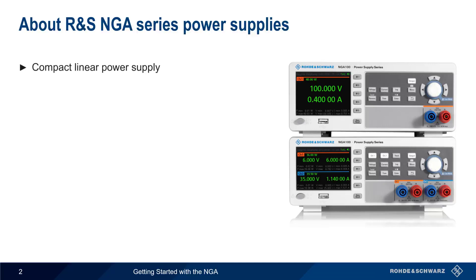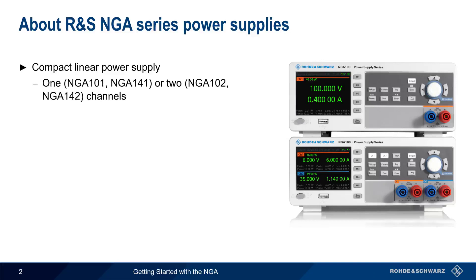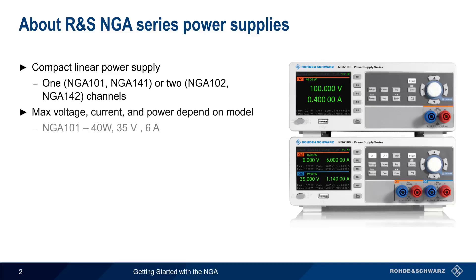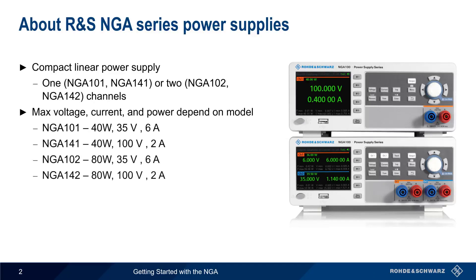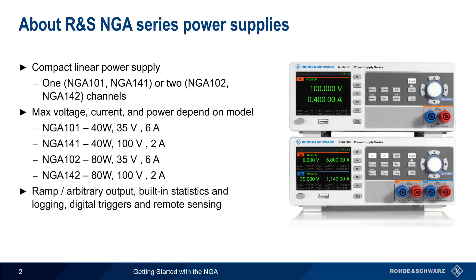The NGA is a series of compact linear power supplies, available in either one- or two-channel models. The maximum values of voltage, current, and power depend on the particular model. Some of the more important features include ramp or arbitrary output, integrated statistics and logging, digital input and output triggers, and remote sensing. We'll cover all of these in this presentation.